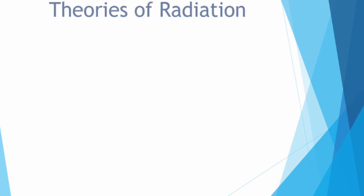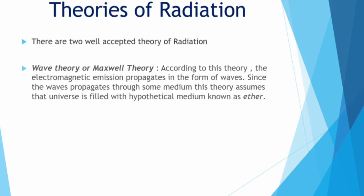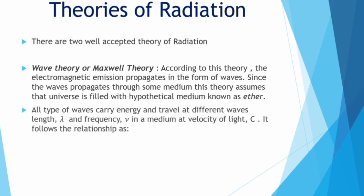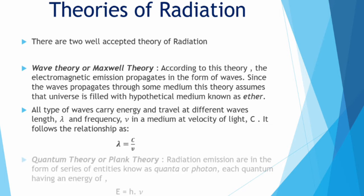Theories of radiation. There are two well-known theories of radiation: Maxwell theory and quantum theory. Maxwell theory is also known as wave theory. In this theory, the electromagnetic emission propagates in the form of waves. And as we know that to propagate in the form of waves requires a medium, thus this theory assumes that the universe is filled with a hypothetical medium known as ether.